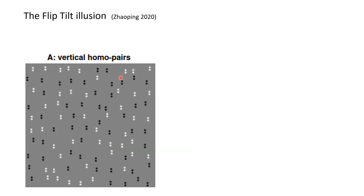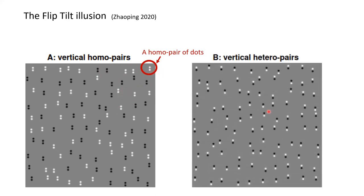Let's create our own illusion called the Flip Tilt Illusion. Here you have lots of vertically aligned things — I call them 'homo pairs' because each pair is either both black or both white dots. There are also 'hetero pairs' where each pair has one black and one white dot. Both are vertical in central vision. But if you put your gaze here and look at the hetero pairs in the periphery, they appear horizontal. Almost 100 group members tried this — first choice is horizontal, though in one trial it's not easy to be certain.